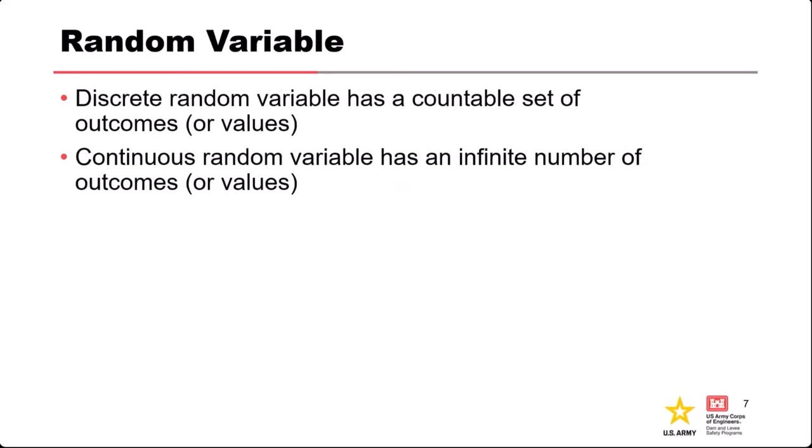There are two general types of random variables. Discrete random variables have a finite or countable set of possibilities — if we're talking about events, these are outcomes; if we're talking about quantitative variables, these are their values. Things like the number of spillway gates, for example. Continuous random variables have an infinite number of outcomes or values, such as estimating the capacity of a structure, which could take an infinite number of possible values.